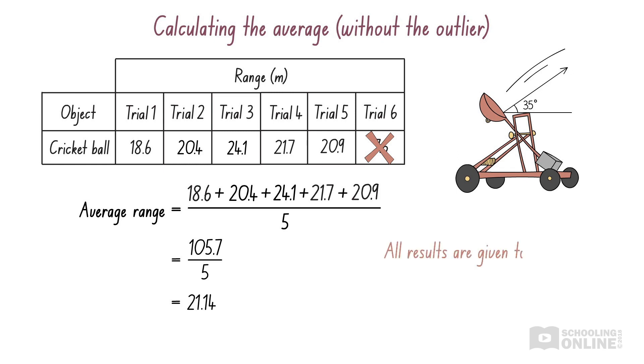This gives us 21.1 metres, which is a reasonable answer. The values that were too large cancelled out the effect of the values that were too small, giving us a reliable final answer.